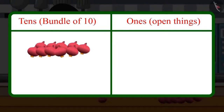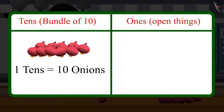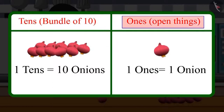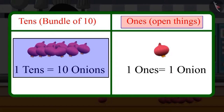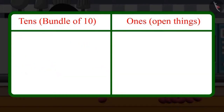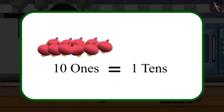When we make a group of 10 things, then this group is called Tens. And the open things are called Ones. So, by that, we mean Tens means a group of 10. And Ones means 1, that is, open things. And when there are 10 ones, then they make 1 ten.